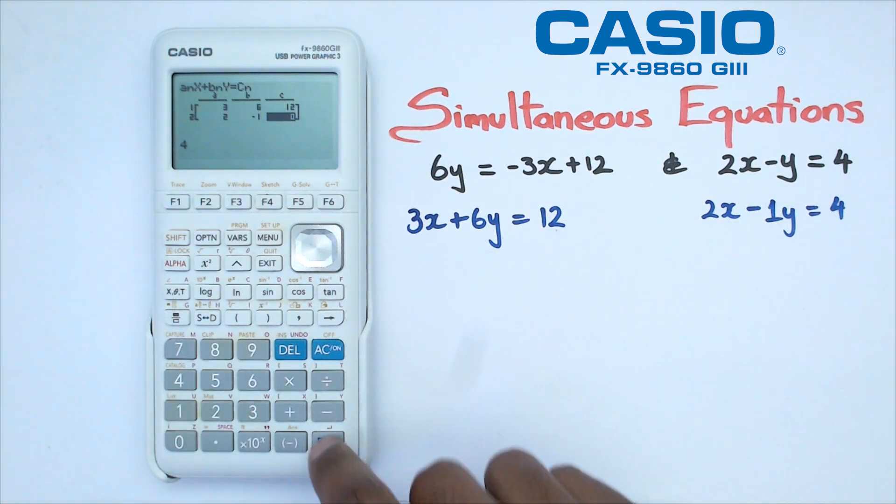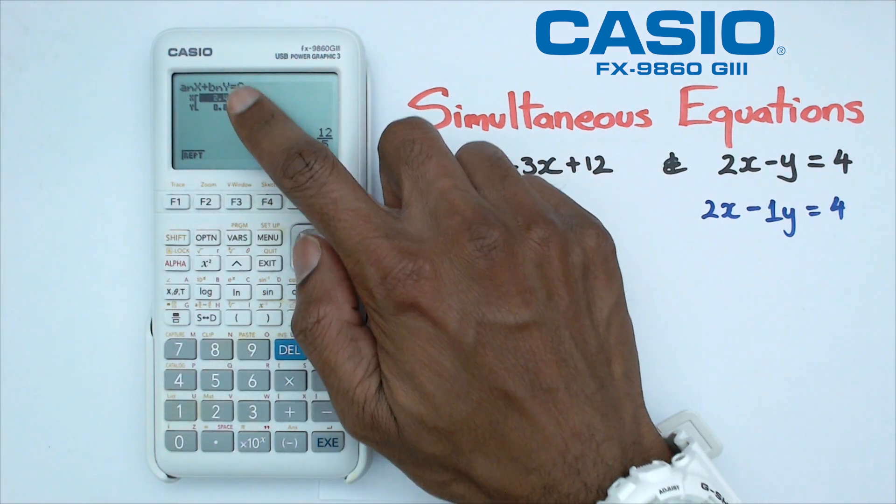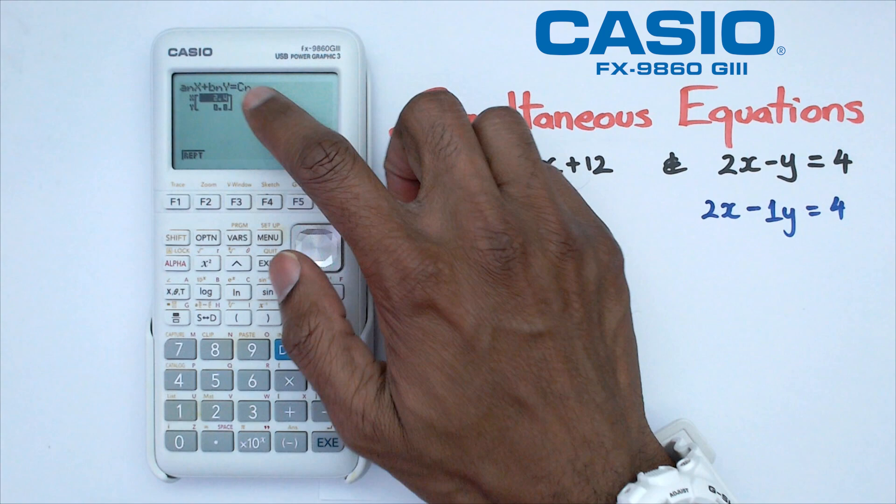Click on that and I press EXE again. And what you'll get is the values for X and Y. Now, in some cases, you actually get numbers that are recurring.